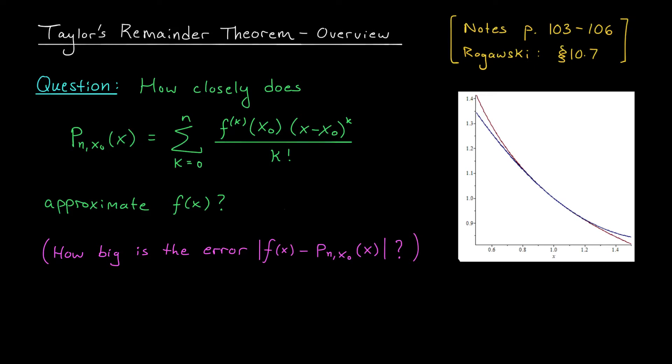Hi everyone, and welcome back. Over the past couple lessons, we've learned how to extend our notion of linear approximation to approximate a complicated function using not just a line, not just a parabola, not just a cubic, but in general a polynomial of degree n, which we refer to as the Taylor polynomial centered at the point of approximation x0. We've derived a formula to help us find these polynomials, and we've learned some tricks to make the computations a little bit easier.